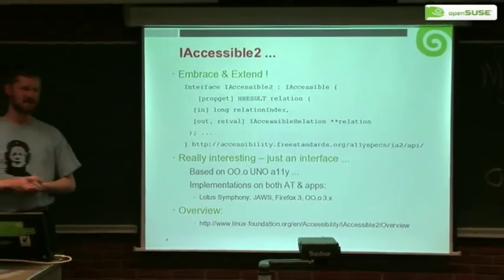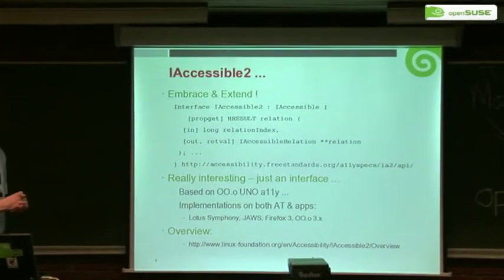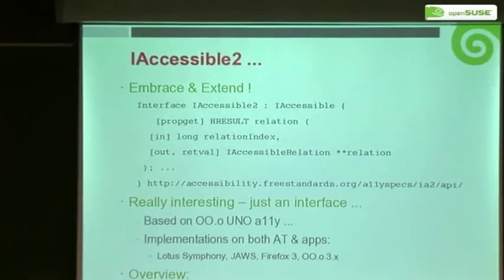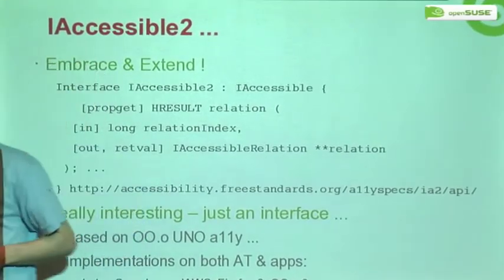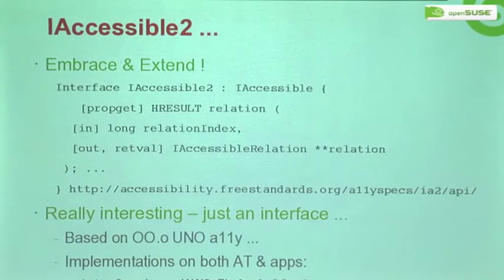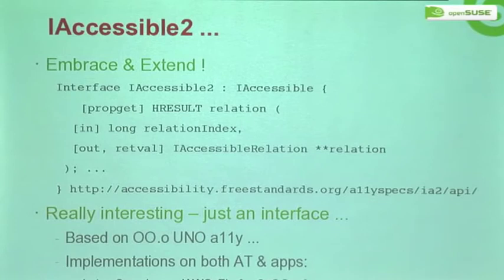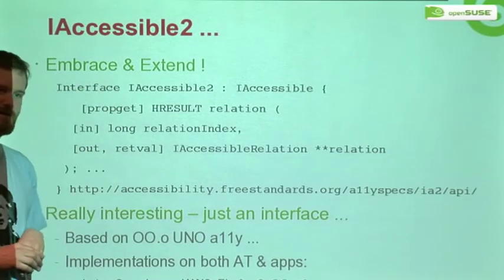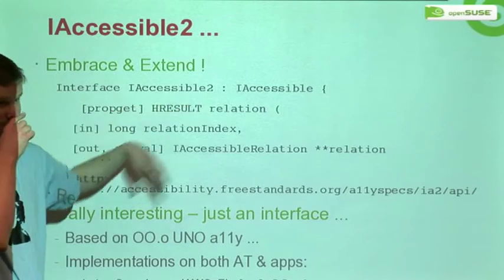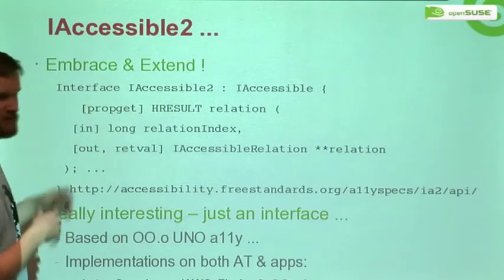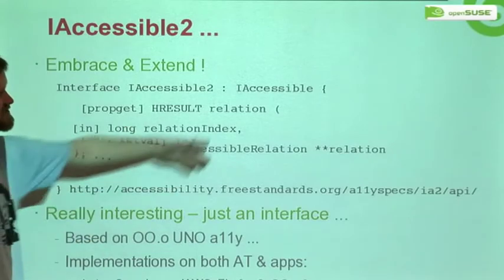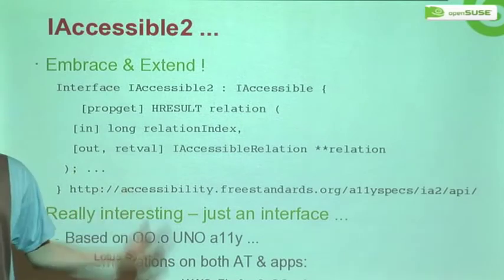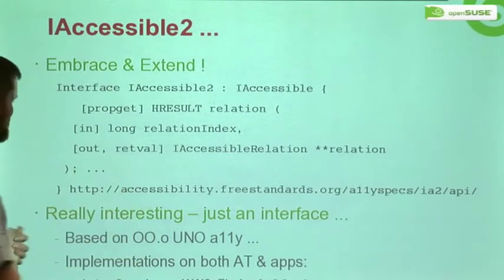Into this mix there was also a thing called iAccessible2. This was created by IBM, and it's very interesting. Microsoft have an interface called iAccessible on their platform, and as we've explained, iAccessible has a number of problems and it's not as rich and functional as it could be. So IBM essentially embraced it and extended it. They created iAccessible2 — unfortunately in COM you can't really do interface versioning except by appending a number, hence iAccessible2. They just inherited from this interface and then added a whole load of new stuff that was good and people wanted.